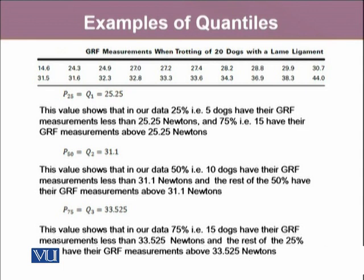Similarly, for the third quartile, which is P75, it is 33.525, which shows that in our data 75, which is 15 out of 20 dogs, have their GRF measurements less than 33.525 Newtons, and the rest of the 25 percent have their GRF measurements above 33.525 Newtons.